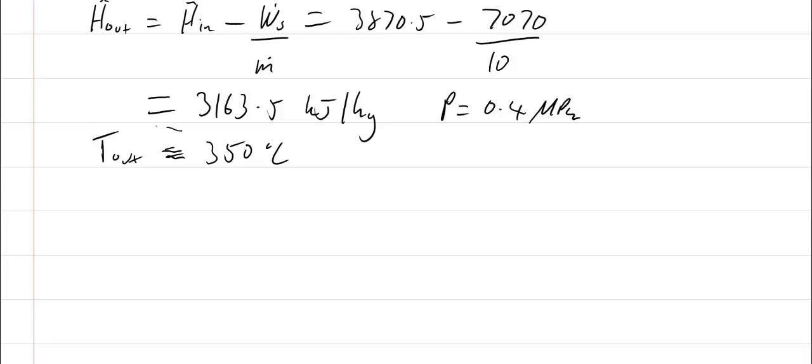A higher outlet temperature is because we've got a non-reversible system and we haven't been able to extract as much work as we can for the reversible system. The fact we haven't taken as much work out means that the final temperature is higher. The temperature hasn't gone down as much.